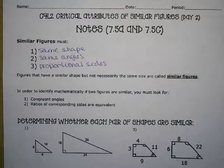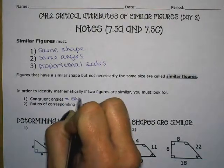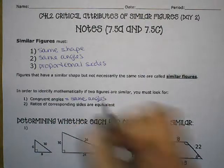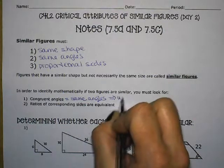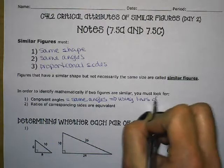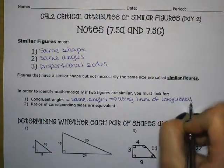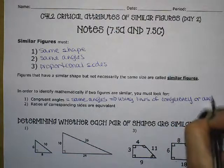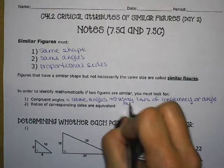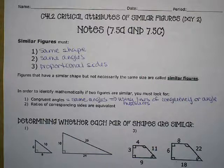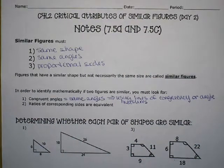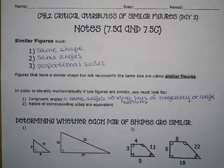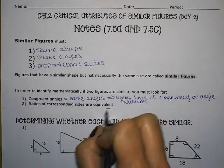Figures that have similar shapes but not necessarily the same size are called similar figures. In order to identify mathematically if two figures are similar, you must look for congruent angles, and remember that means same angles. This can be seen using lines of congruency or angle measures. We will talk about this more when we look at example number three. Another way to determine if they are similar is using ratios of corresponding sides and making sure they are equivalent by checking proportionality.